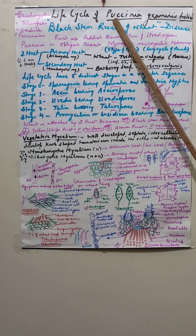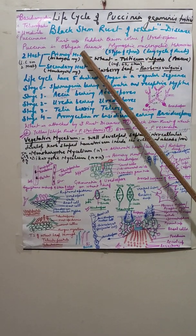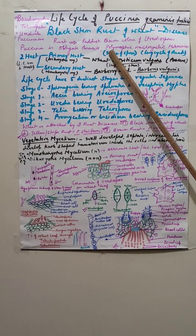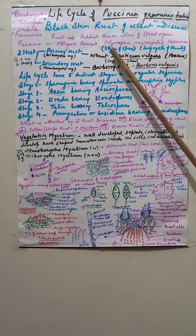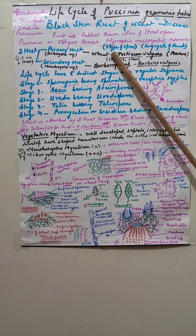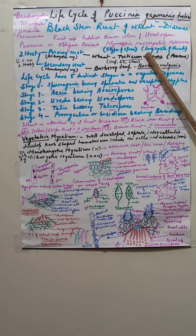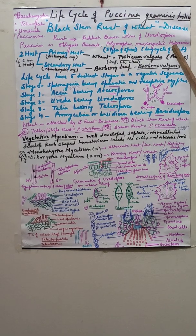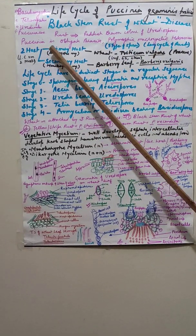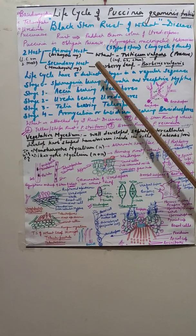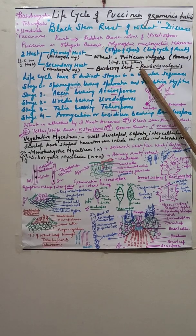Paxcinia causes a disease which is known as the black stem rust of wheat. Paxcinia is an obligate parasite, it is polymorphic, macrocyclic and heteroecious fungi. Polymorphic means a total of 5 types of spores are formed in the entire life cycle. Macrocyclic means the life cycle is very long, and heteroecious indicates that Paxcinia completes its life cycle on two hosts — one is wheat, the primary host, and the secondary one is barberry leaf, also known as Berberis vulgaris.